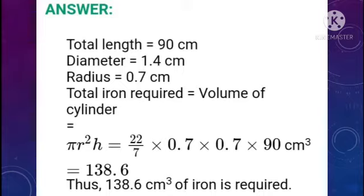Radius = 0.7 cm. The total iron required equals the volume of the cylinder = πR²H = (22/7) × 0.7 × 0.7 × 90 = 138.6 cm³. Thus, 138.6 cm³ of iron is required.